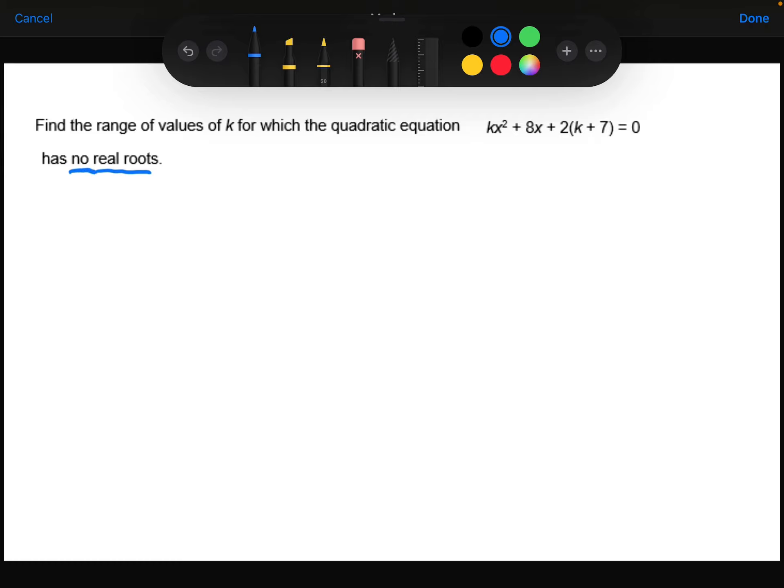So no real roots is telling me that the discriminant of this equation is negative. The b² - 4ac is less than 0.